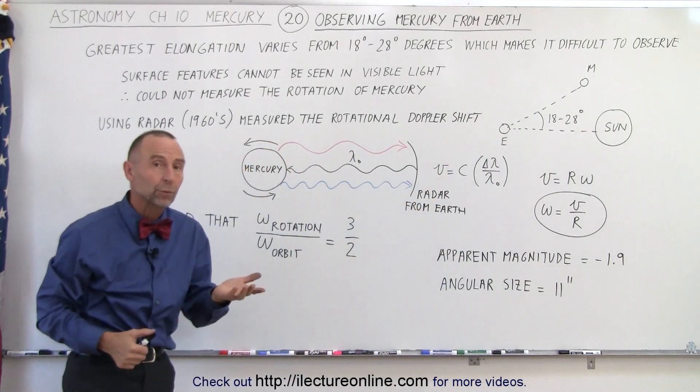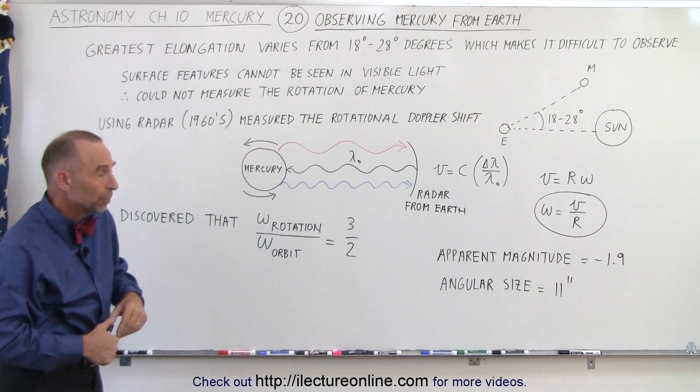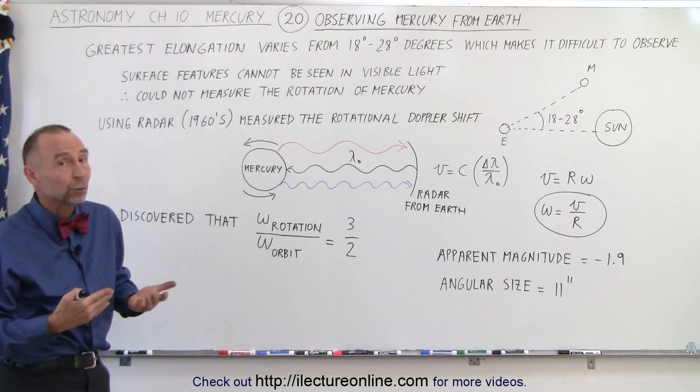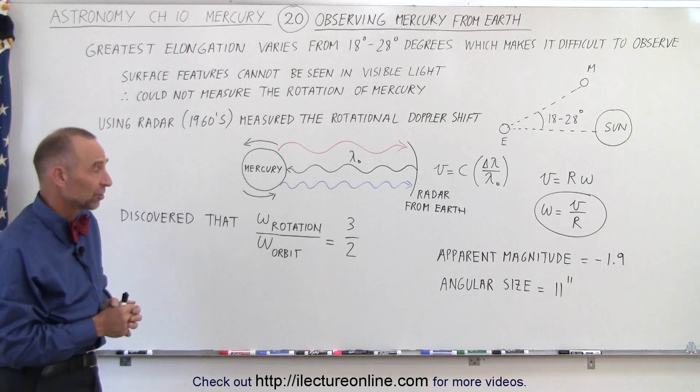The angular size is 11 arcseconds, so you can see Mercury fairly well with any good-sized telescope, but again, in visible light, not going to see much except just a disk.